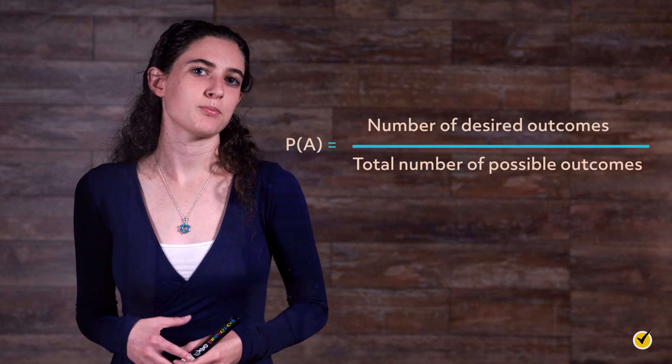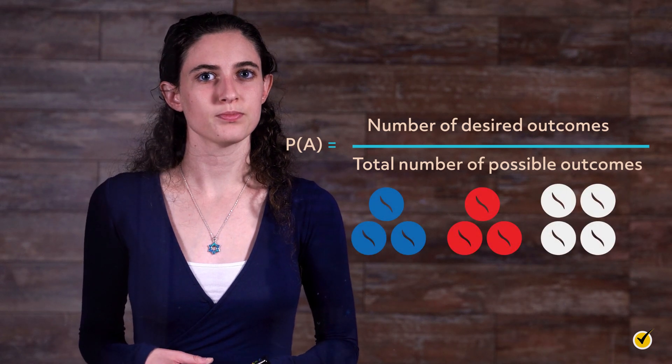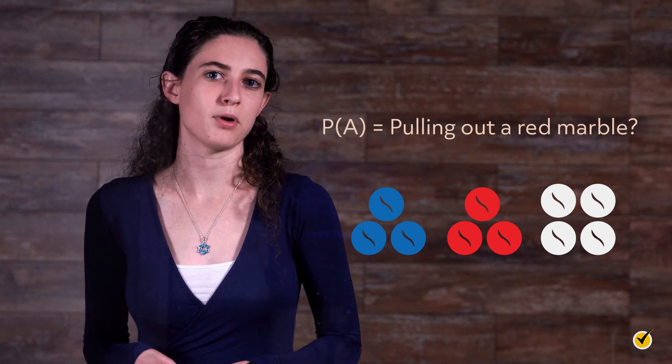Here's an example of a basic probability problem. There are 10 marbles in a bag: 3 are blue, 3 are red, and 4 are white. What are the odds of pulling out a red marble?